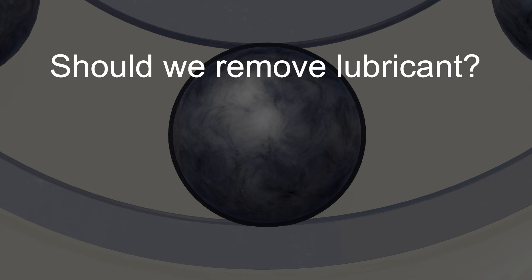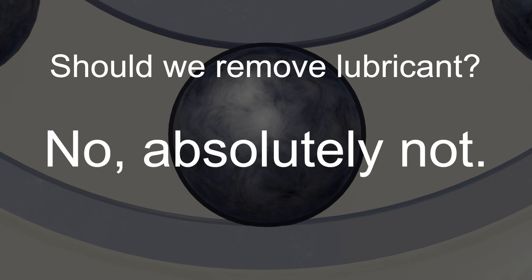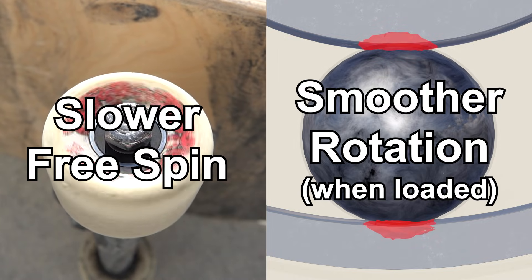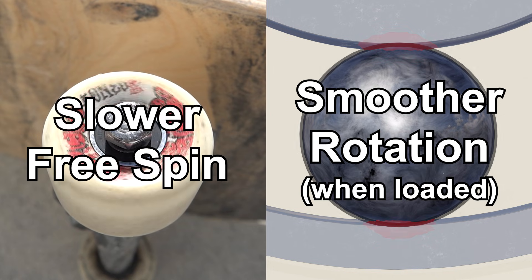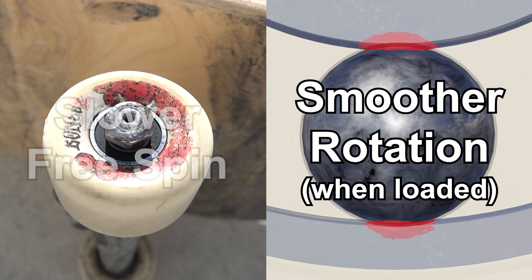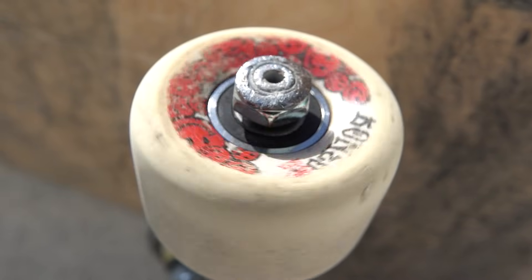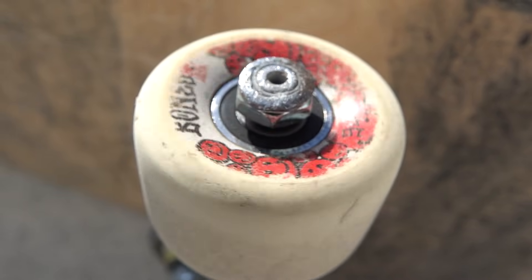But does that mean we should remove lubricants entirely? No, absolutely not. While applying lubricant slows free spinning, the benefit of reduced friction when bearings are under pressure far outweighs any loss in free spin performance. In other words, how long a bearing spins when it free spins has no real meaning.